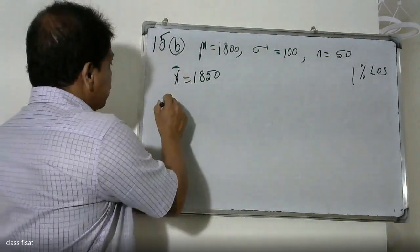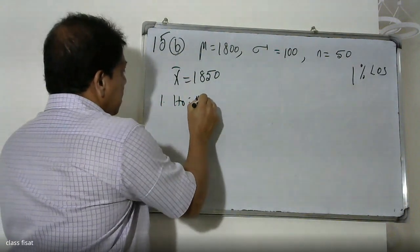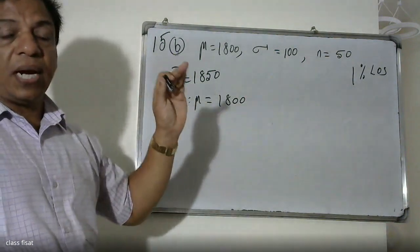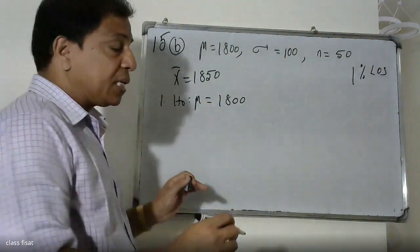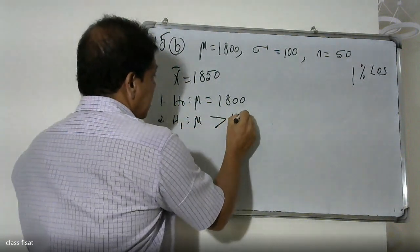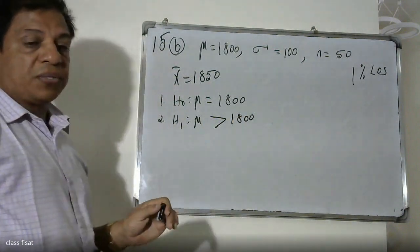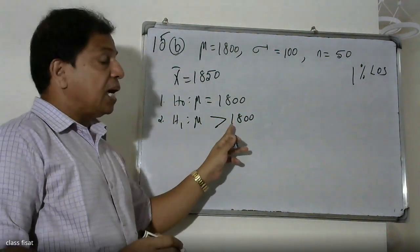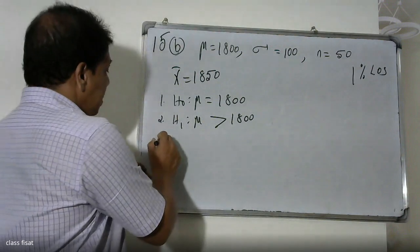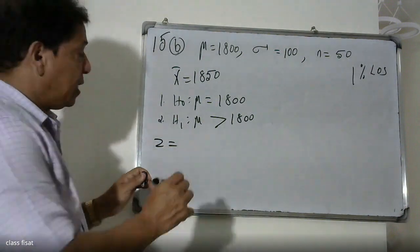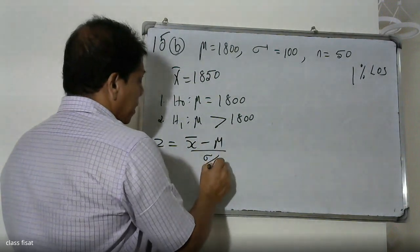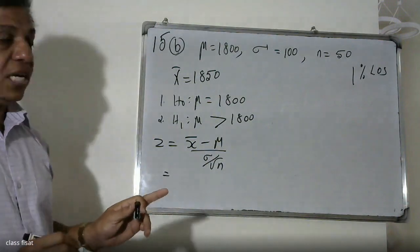First, we set up the hypotheses. The null hypothesis H₀: μ = 1800. The alternative hypothesis H₁: μ > 1800. Since we are testing for an increase in mean life, this is a one-tailed test. The test statistic formula is z = (x̄ − μ) / (σ / √n).